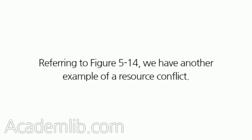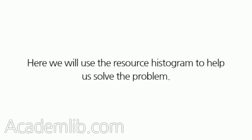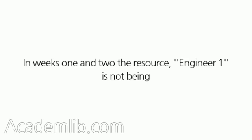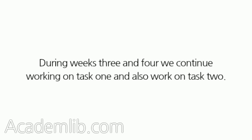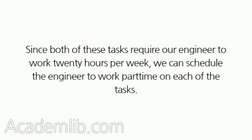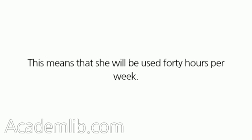Referring to Figure 5-14, we have another example of a resource conflict. Here we will use the resource histogram to help us solve the problem. In Weeks 1 and 2 the resource Engineer 1 is not being fully utilized — Engineer 1 is used for only 20 hours per week. Task 1 is the only task using our engineer. During Weeks 3 and 4 we continue working on Task 1 and also work on Task 2. Since both of these tasks require our engineer to work 20 hours per week, we can schedule the engineer to work part-time on each of the tasks, meaning she will be used 40 hours per week.